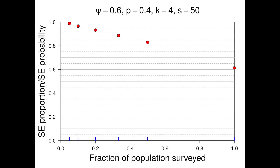There are secondary adjustments we can make, and on screen here is a graphic illustrating how big a difference applying these corrections to our standard error can make. This is the case where occupancy (psi) is 0.6, detection probability is 0.4 per survey, we have four surveys (k=4), and we've collected data from 50 units. On the x-axis is the fraction of the total population of interest that's been surveyed. On the right-hand side at 100%, the standard error for the proportion is about 60% of the standard error for the probability of occupancy estimated from PRESENCE.